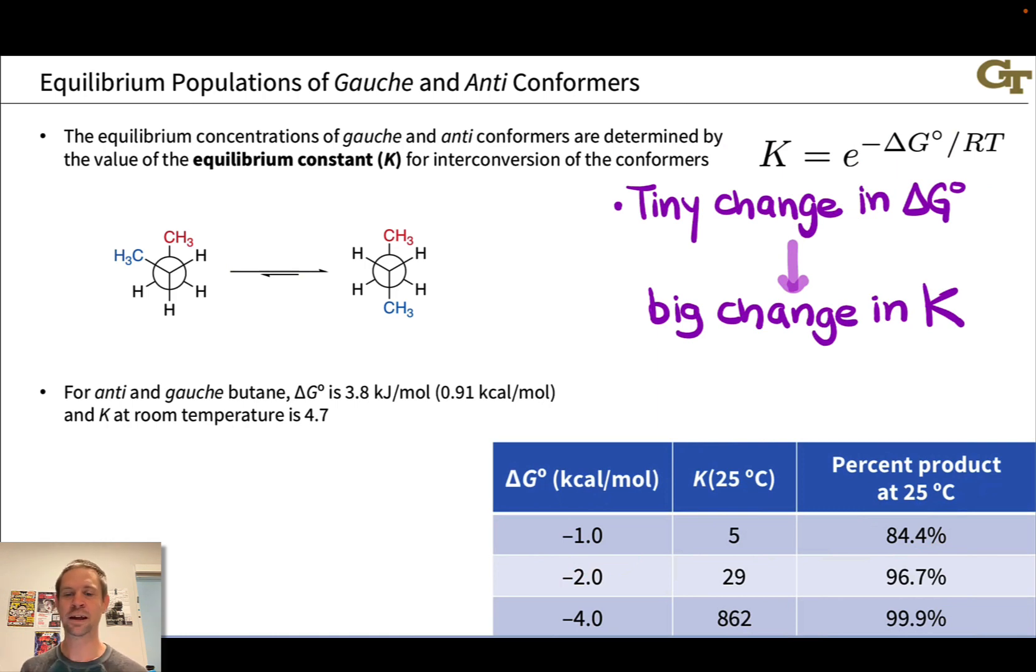we've got about 85% of the more stable product conformation. At negative 2 kilocalories per mole, K is up to about 29. And this 29 to 1 ratio corresponds to about 97% product at 25 degrees C. At the seemingly small energy difference of only 4 kilocalories per mole, K is up at 862 at 25 degrees C. And this corresponds to 99.9% product.